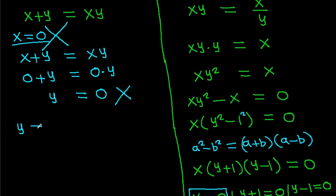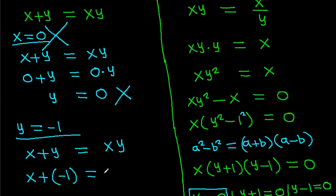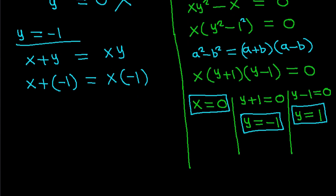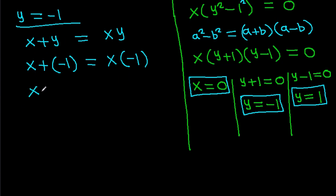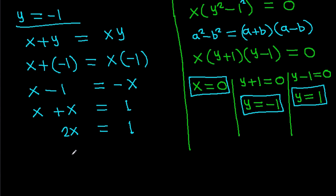Now, if y equals minus 1, substituting into the first equation: x plus (minus 1) equals x times (minus 1), so x minus 1 equals minus x. Bringing x terms together: x plus x equals 1, so 2x equals 1, giving x equals 1/2. Therefore, if y equals minus 1, then x equals 1/2.